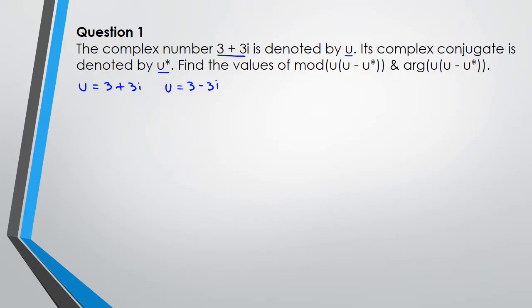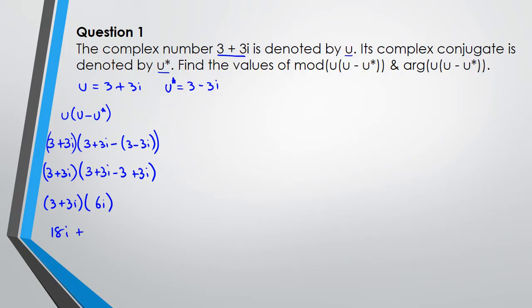So what I've asked is I've asked to find the values of modulus and argument. So first I need to put the complex numbers together, so I've got u times u minus u conjugate. So then we have 3 plus 3i multiplied by 3 plus 3i minus 3 minus 3i. So what we're going to get is 3 plus 3i and we have 3 plus 3i minus 3 plus 3i. Simplifying this further, we're going to get 6i, so we've got 18i plus 18i squared.